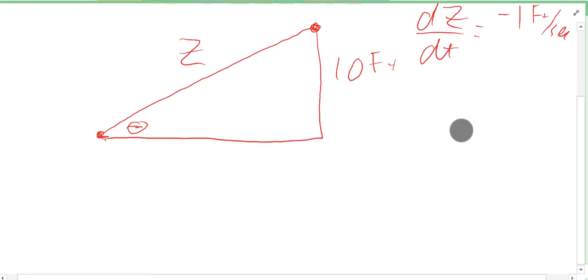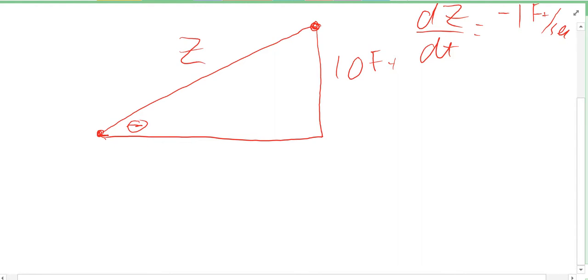We're going to set this up using sine—we could also use cosecant if you don't want to have Z in the denominator. I'm going to do sine just so we can see what it would look like.